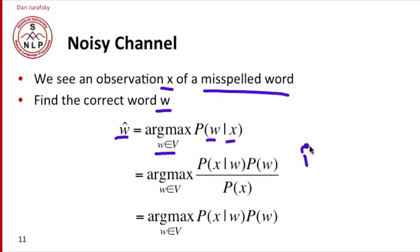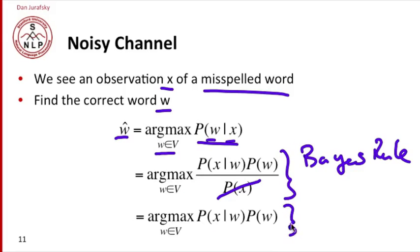We're going to use Bayes' rule to replace that probability. So the probability of w given x, we're going to replace that with P(x|w) times P(w) over P(x). We can also eliminate the denominator. So whatever word maximizes this equation will also maximize this equation.